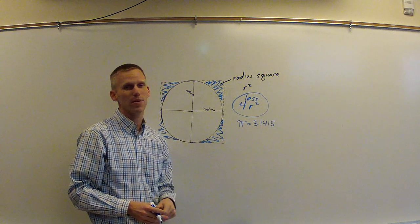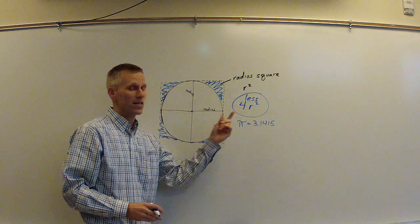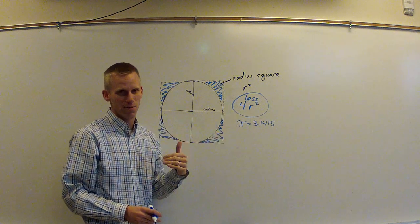And in fact, what ends up happening is that there is just a few more than three radius squares in here, but less than four radius squares.